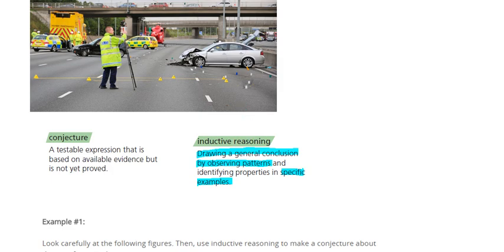Okay, that's the reasoning. Now, more specific, within this whole area of inductive reasoning, there's something called a conjecture. So when we make a conjecture, that is some kind of testable expression. So it's a statement or it's a mathematical expression of some sort that is based on available evidence,